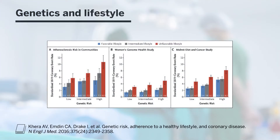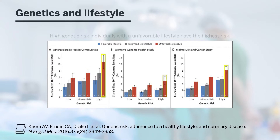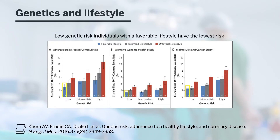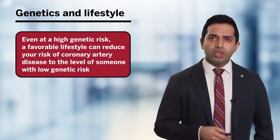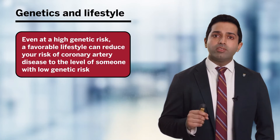When we consider the interaction between genetics and lifestyle, we often wonder whether our genetics are our fate. When we look at a study that characterizes individuals' genetic risk into low, intermediate, and high risk, lifestyle intervention still stratifies risk. The red bars represent those with an unfavorable lifestyle, the blue bars a favorable lifestyle. High genetic risk individuals with an unfavorable lifestyle have the highest risk, while low genetic risk individuals with a favorable lifestyle have the lowest. Even in the highest genetic risk group, those with a favorable lifestyle were able to significantly mitigate their risk to an essentially equivalent level as those in the low genetic risk category.